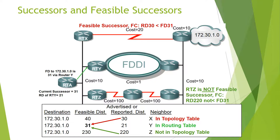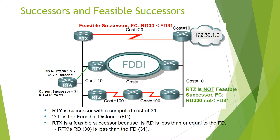Examining successor and feasible successor: RTY is the successor with a computed feasible distance of FD=31. RTX has a reported distance RD=30, which is less than FD=31, so RTX meets the feasibility condition and is a feasible successor. RTZ has a reported distance RD=220, which is greater than FD=31, so RTZ does not meet the feasibility condition and is not a feasible successor. RTZ is therefore not stored as a feasible successor in the topology table.